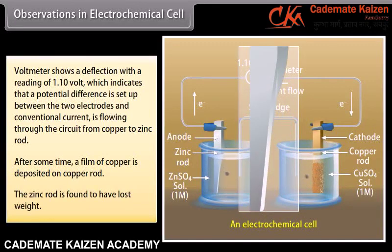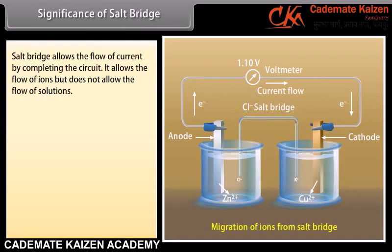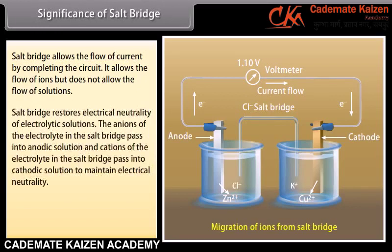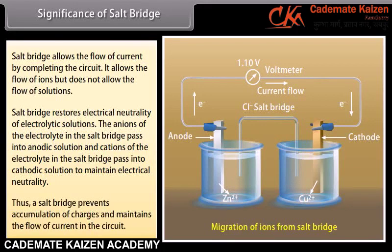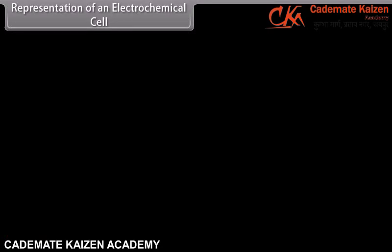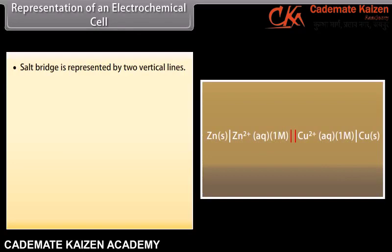Working of electrochemical cell — Oxidation: As the zinc rod loses weight, zinc solid must have gone into solution. Zinc metal does not dissolve as such in aqueous solution; therefore it must have been converted into zinc ions. Zinc undergoes oxidation into zinc ions. Reduction: A film of copper solid is deposited on the copper rod, meaning copper ions present in solution must have been converted into copper solid. Copper ions undergo reduction into copper solid. By convention, the electrode at which oxidation takes place is called anode, and that at which reduction takes place is called cathode. In this electrochemical cell, zinc rod is anode and copper rod is cathode.